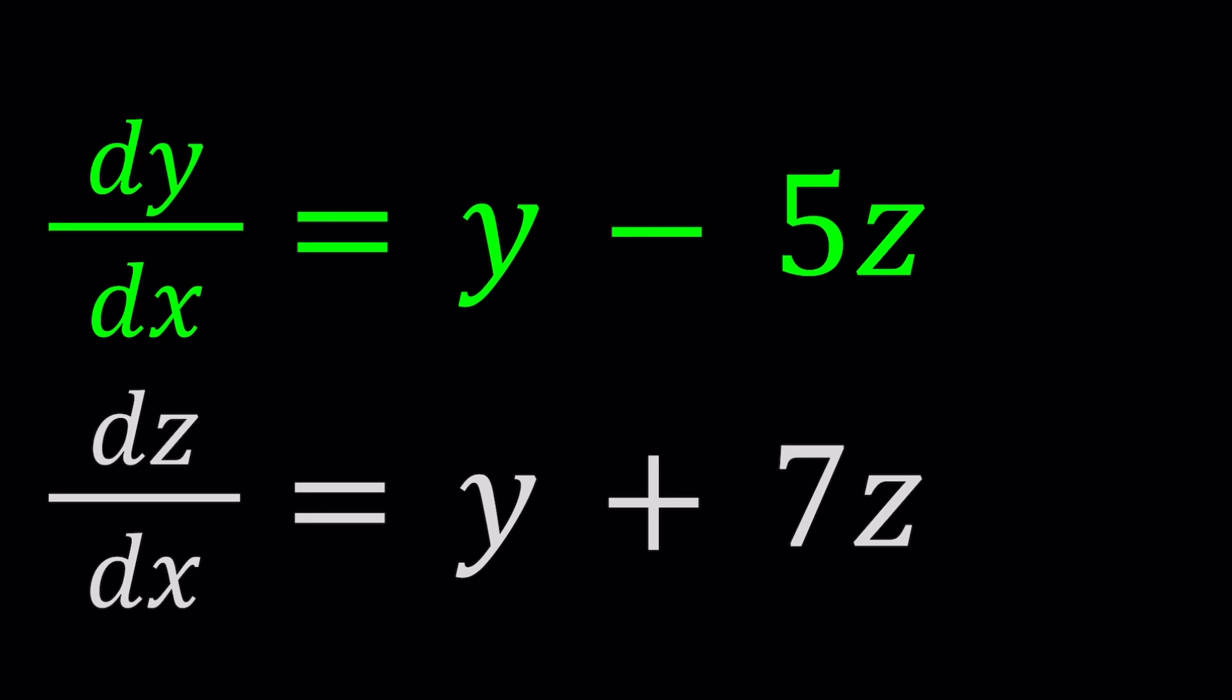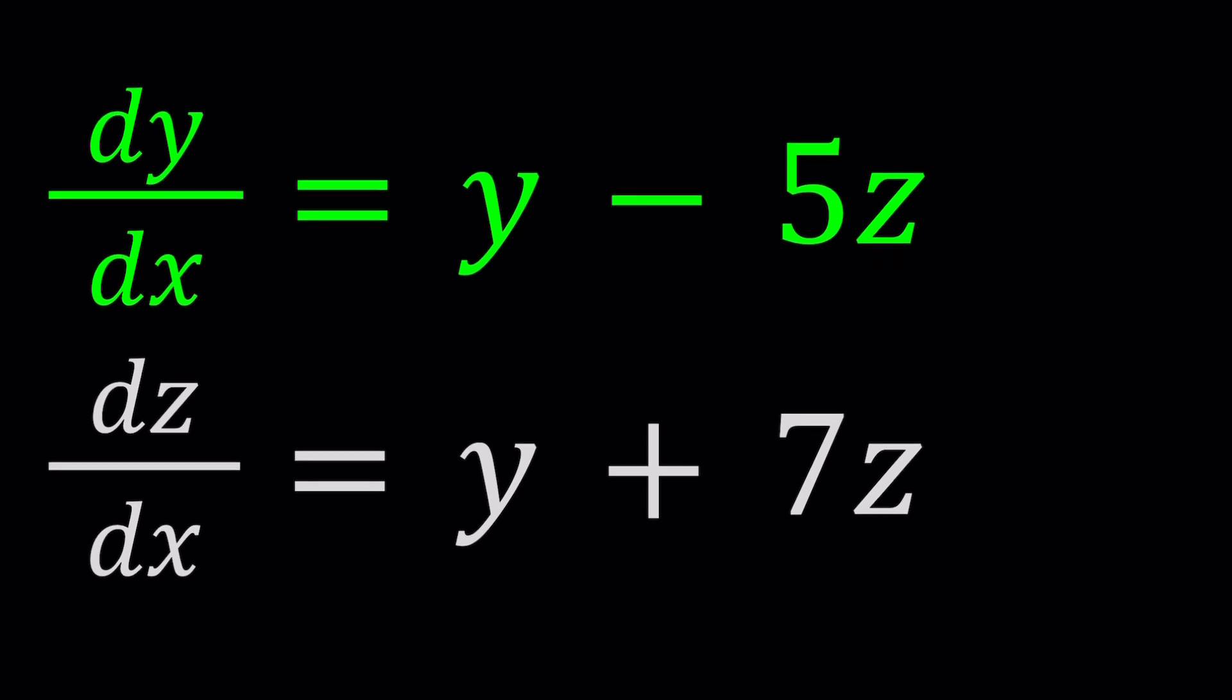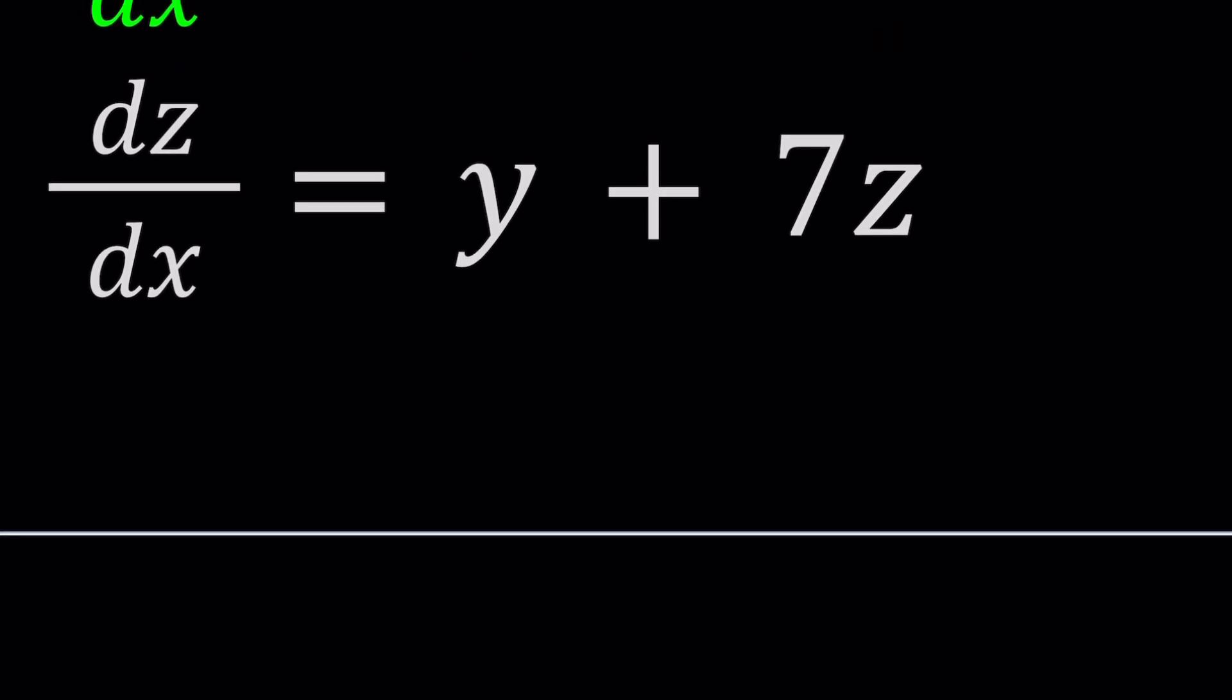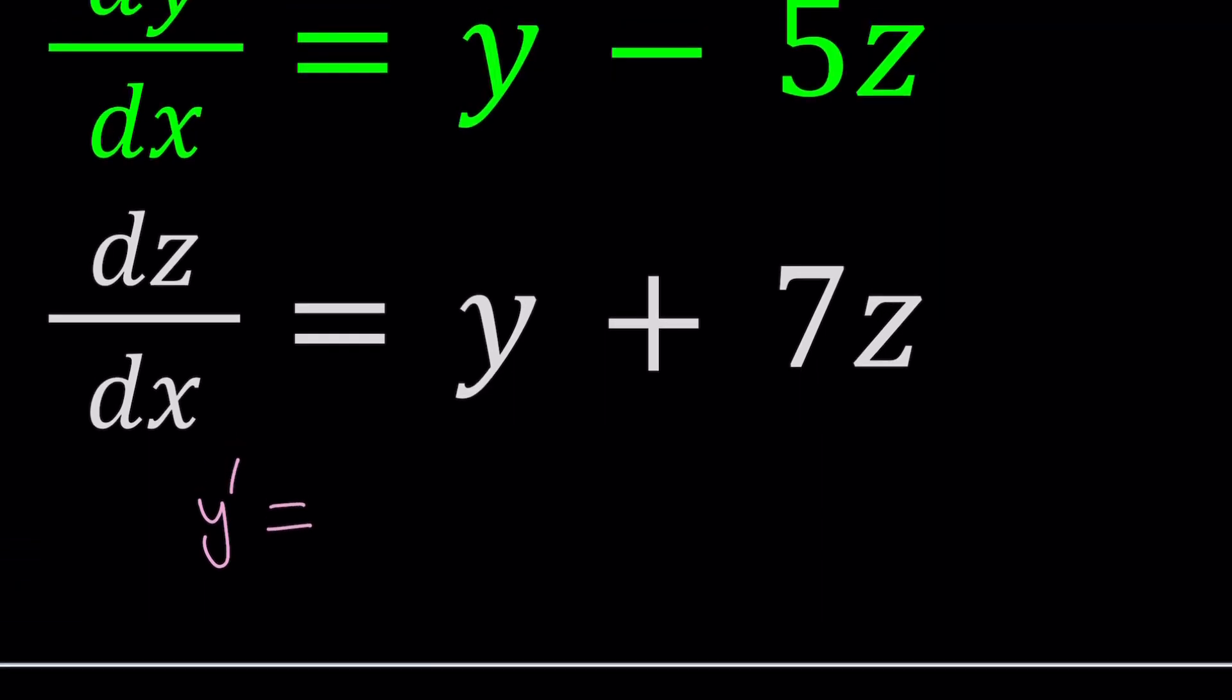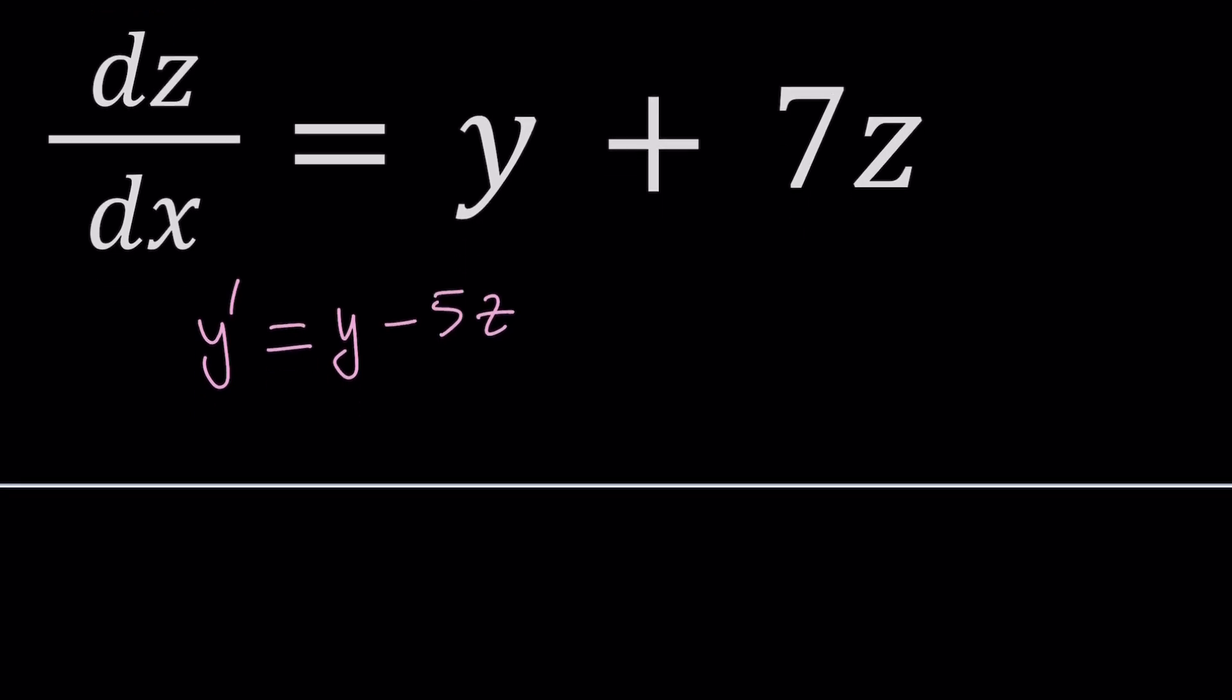First of all, I want to use kind of like a short notation. Instead of dy/dx, I'm going to write it as y prime, since y is a function of x. So we can just talk about the derivatives here. We don't really have partial derivatives, and dz/dx, I can abbreviate it as z prime. And that's equal to y + 7z.